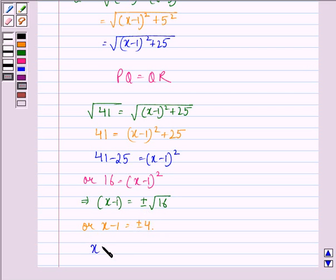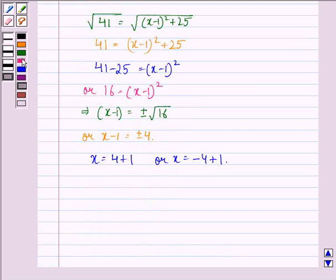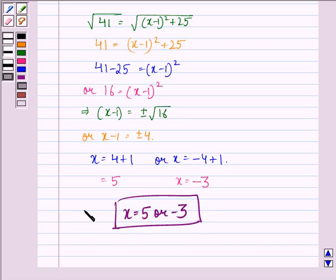So, we have either x is equal to 4 plus 1 or x is equal to -4 plus 1. Here, x will be equal to 5 and here x will be equal to -3. So, our answer to this question is x is equal to 5 or -3. I hope that you understood the solution and enjoyed the session. Have a good day.